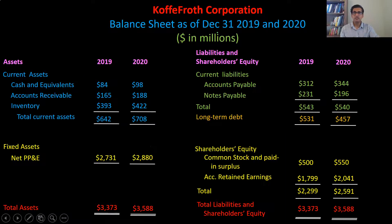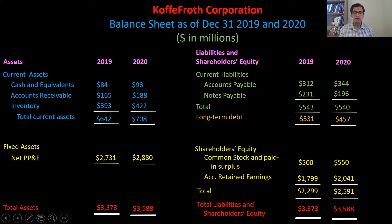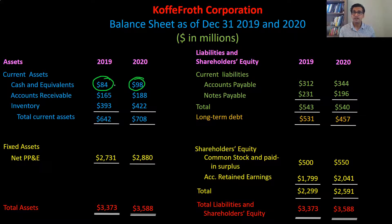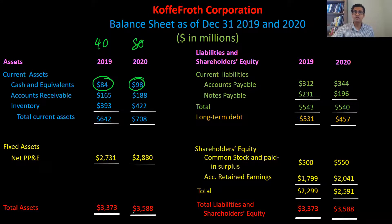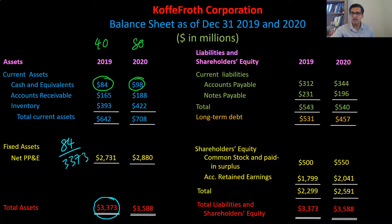So on a balance sheet, for example, if you have assets, liabilities, and equity, it doesn't make sense to compare 84 million in cash equivalents with 98 million just like that. Comparing dollar figures doesn't make sense, just like comparing 40 points with 80 points doesn't make sense. What you want to do is control for the effect of size or scale, recognizing that total assets in 2019 are 3.37 billion, whereas in 2020 they're 3.58 billion. So we take that 84 million and divide it by 3.373.